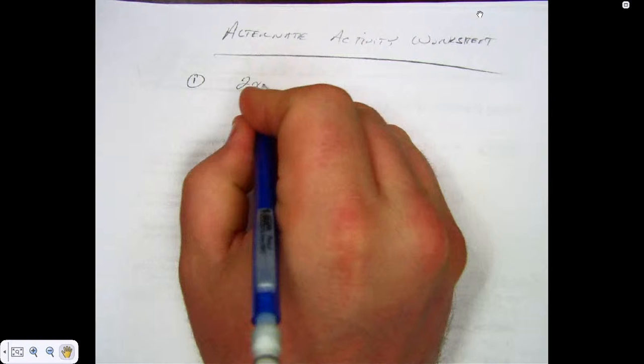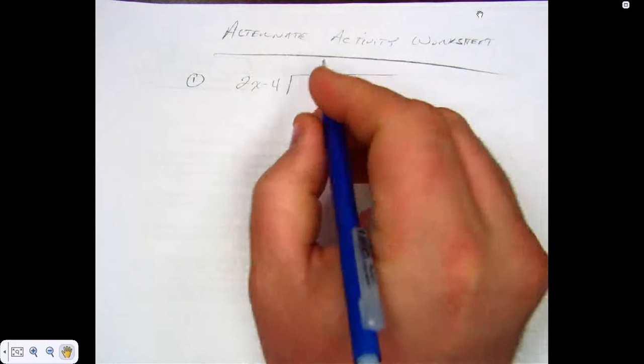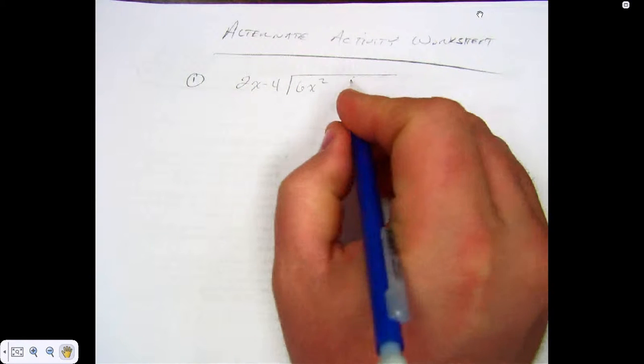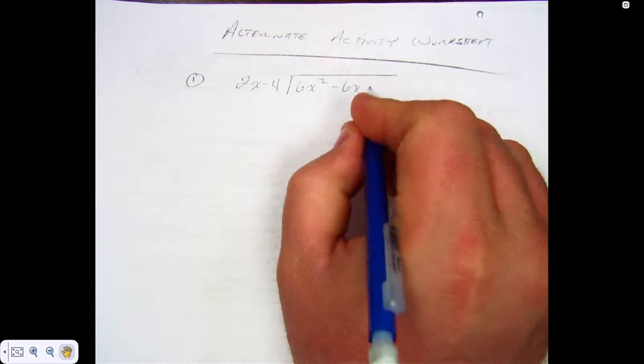Number one, we're going to divide 2x minus 4 into 6x squared minus 6x minus 12.